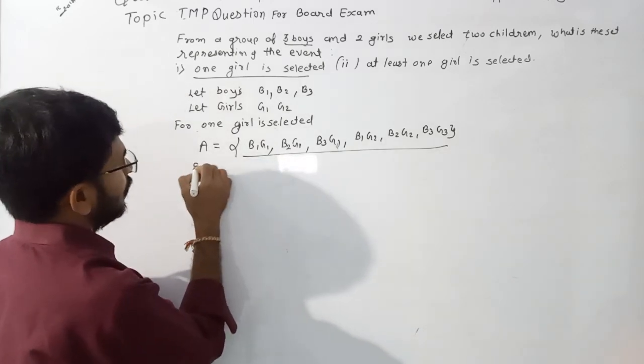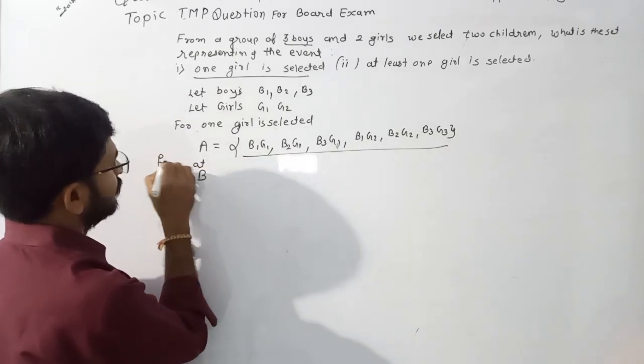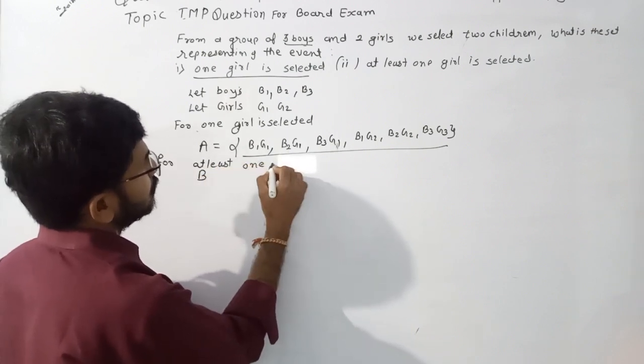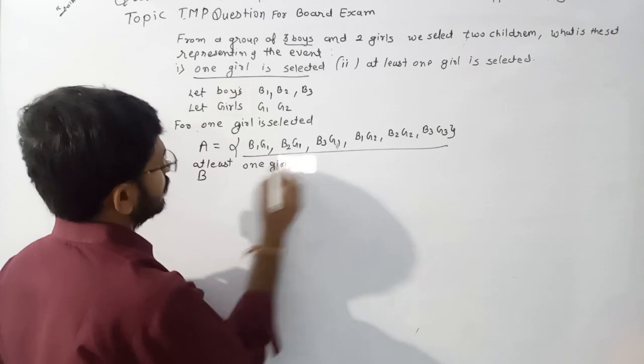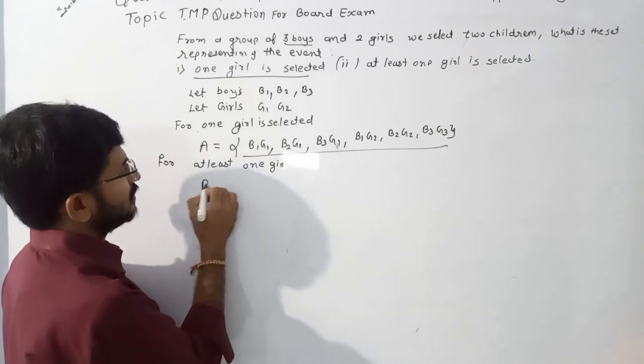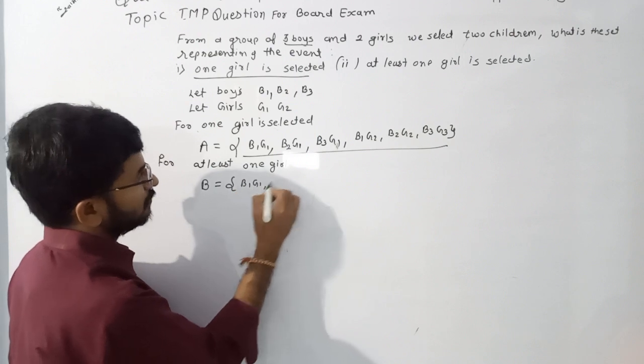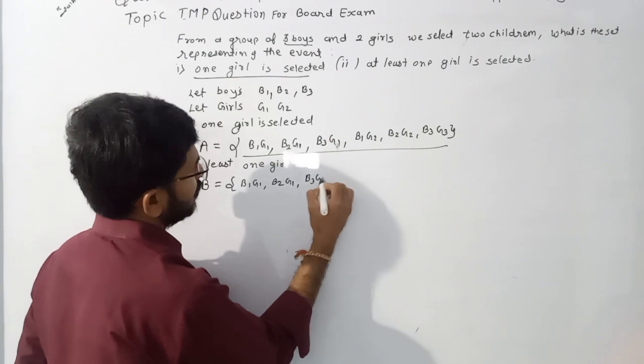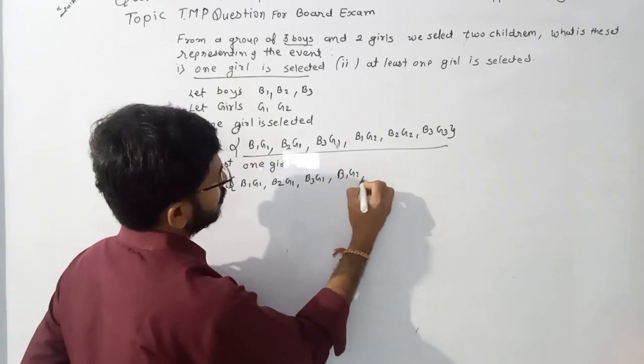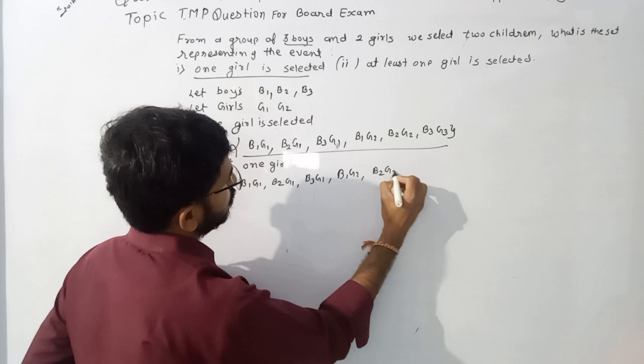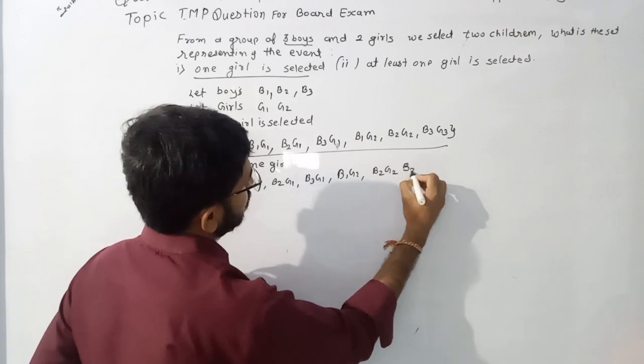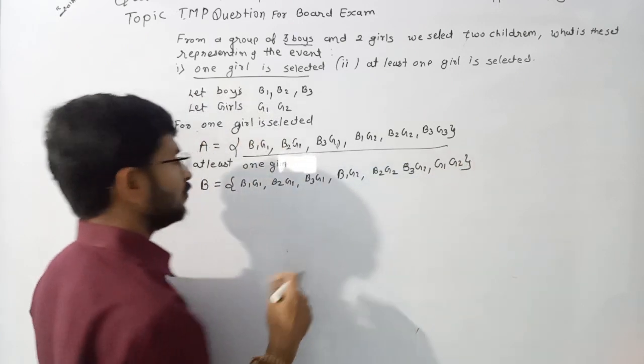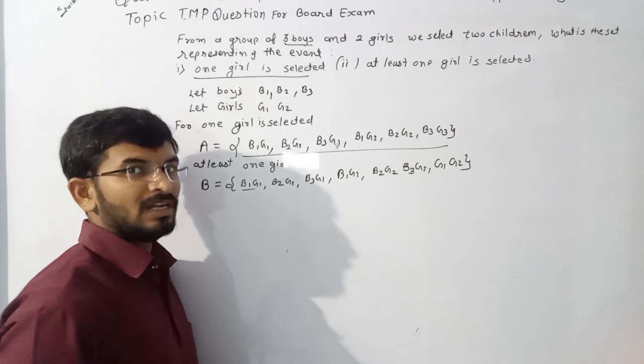Now if two girls are selected, the set for at least one girl includes: B1 and G1, B1 and G2, B2 and G1, B2 and G2, B3 and G1, B3 and G2, and G1 and G2. There are a total of 7 possible outcomes for at least one girl.